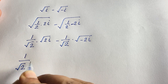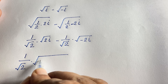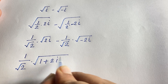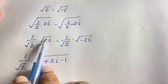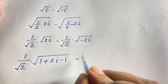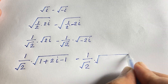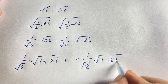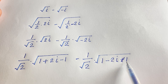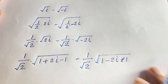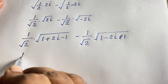Now I rewrite 2i as (1 + 2i − 1), adding and subtracting 1 so nothing changes — the ones cancel and we recover 2i. Similarly, −2i is rewritten as (1 − 2i − 1 + 1), adding and subtracting 1 again, so the ones cancel and we get back the previous line.